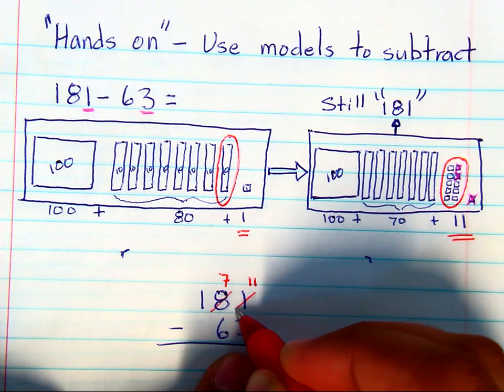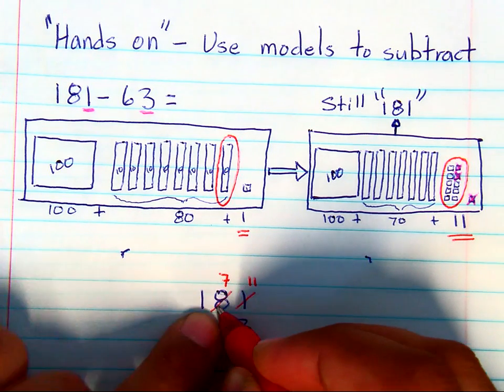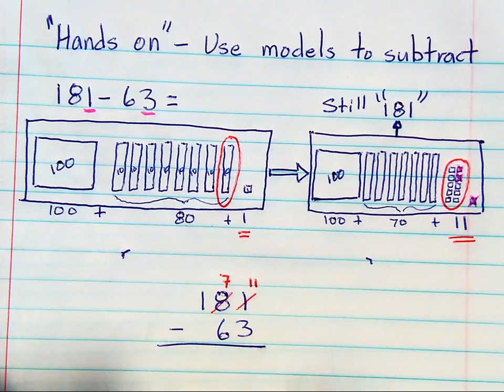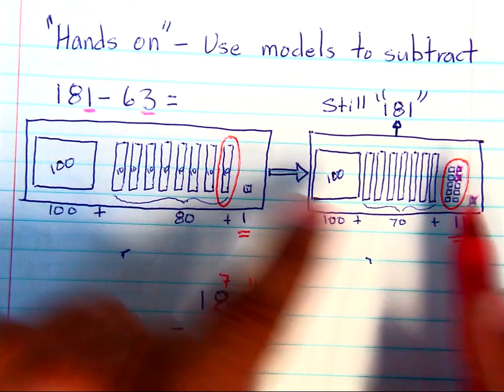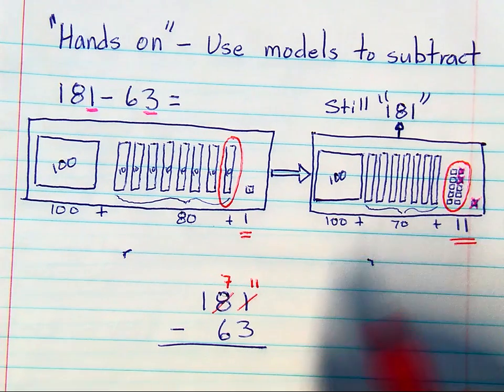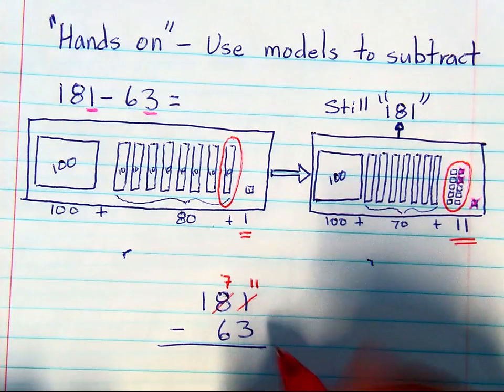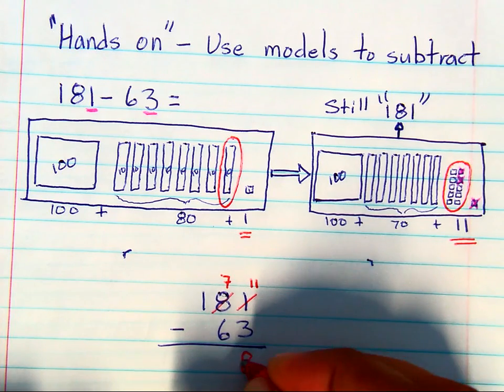taking this 8 and crossing that out, making the 8 a 7, because you have to take one of those tens away in order to make them ones so you can take 3 away. So when you have 11 ones and you take 3 away, you are going to end up with 8 ones.